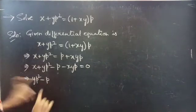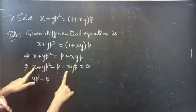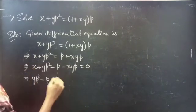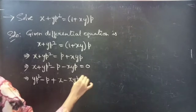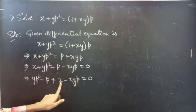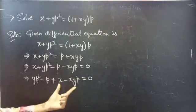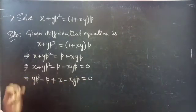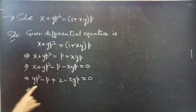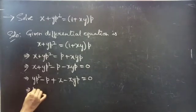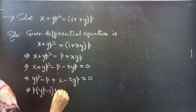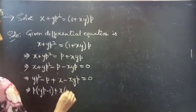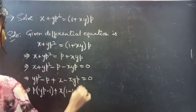From the first two terms, we take p common. Then consider the next two terms: x minus xyp equals to 0, and from those two terms we take x common. Taking p common gives p of yp minus 1, and taking x common gives x of 1 minus yp.